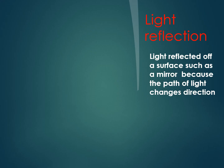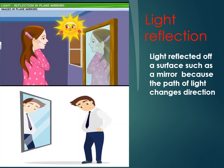Now we are going to speak about light reflected off a surface such as a mirror, because the path of light changes direction. Look at this picture. This girl is looking at herself in a mirror, and this student is looking at his clothes in a mirror. We call this light reflection. We are going to understand what is the reflection of light by watching this video.